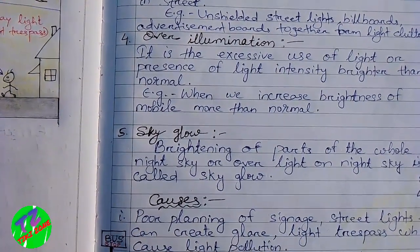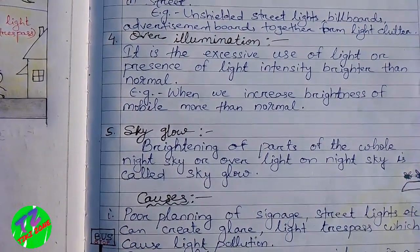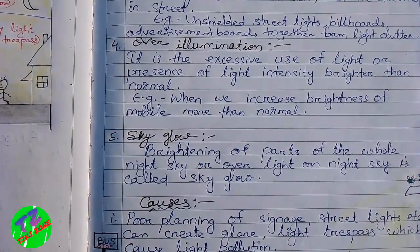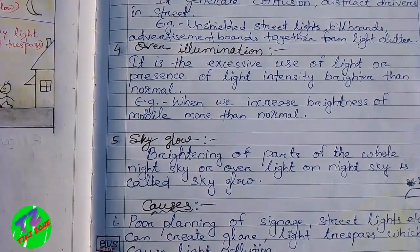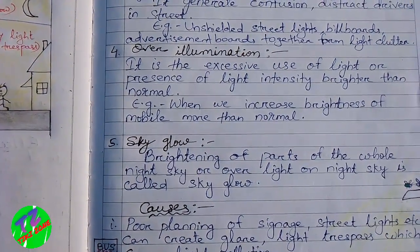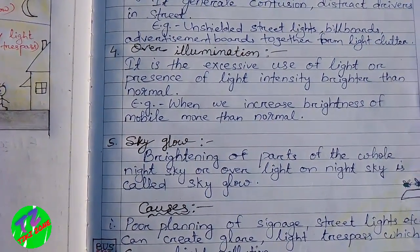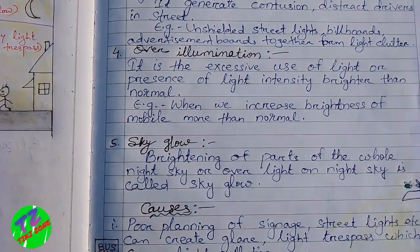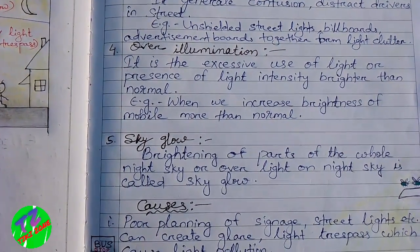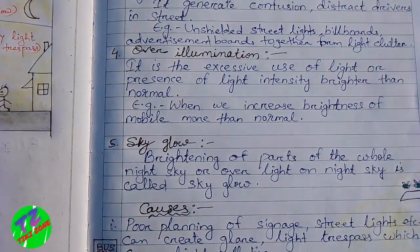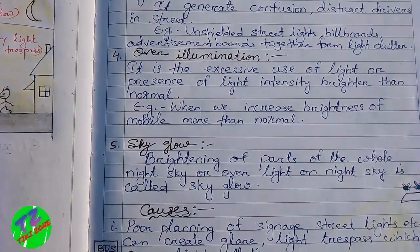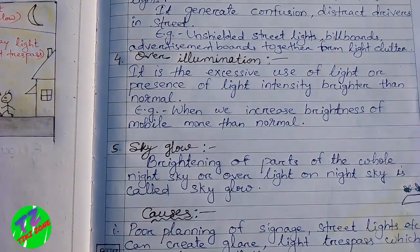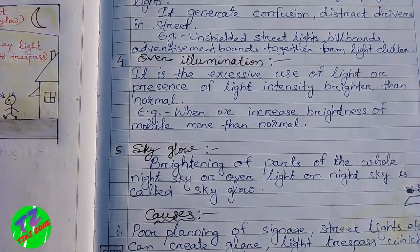The next type is sky glow. The brightening of the whole night sky, or excess light over the night sky, is called sky glow. So these are the types of light pollution we are facing.